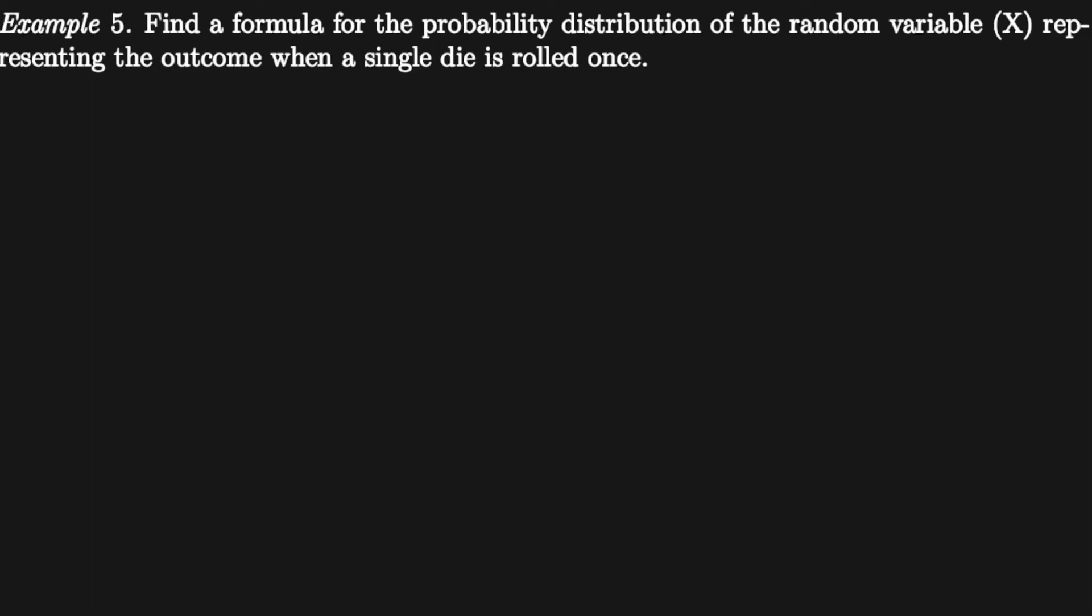So we can see that we can write this as the PMF with X on top and f of x on the bottom, where X goes from one, two, three, four, five, and six. And the outcome of getting it rolled on each side would be one over six, so they're all just one sixth.